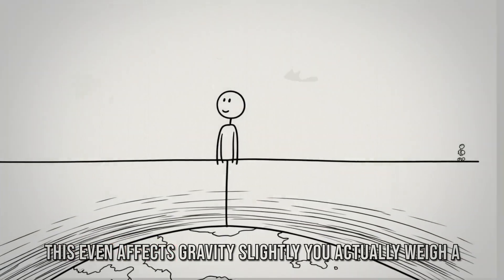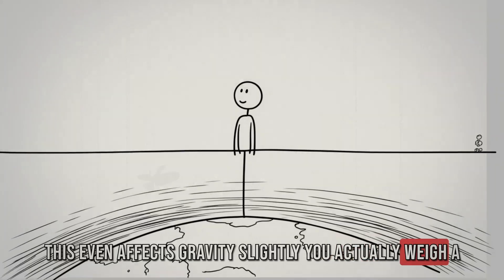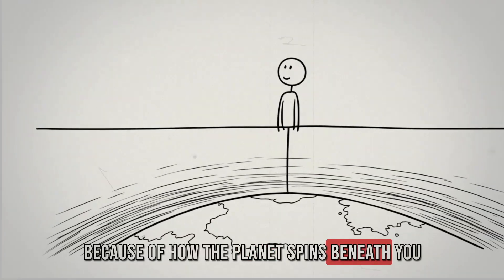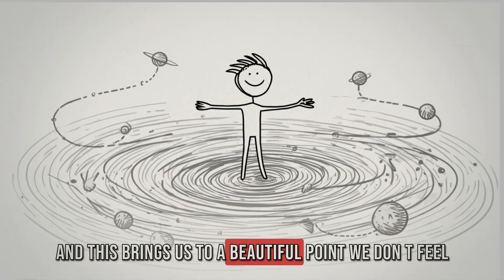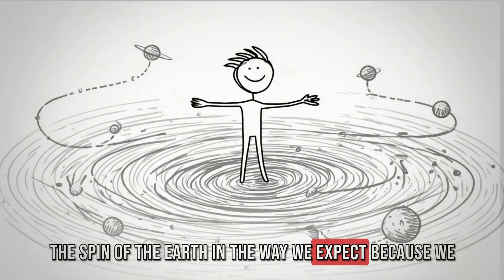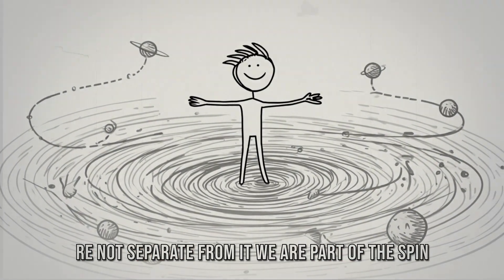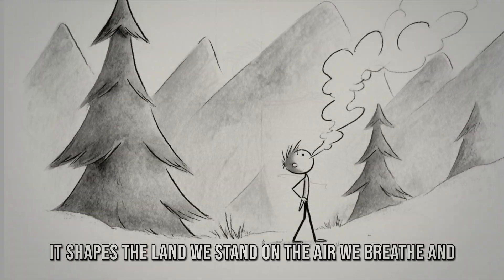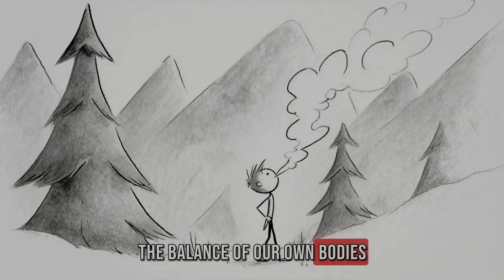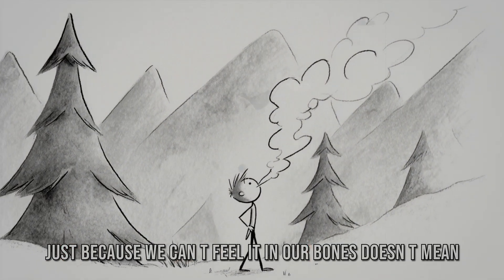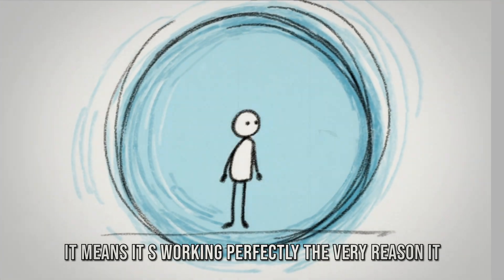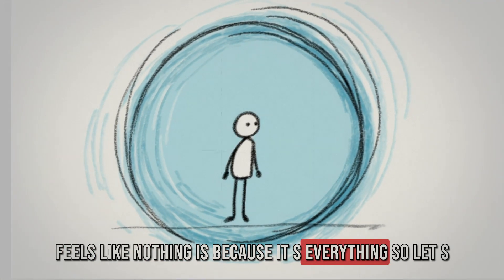This even affects gravity slightly. You actually weigh a tiny bit less at the equator than at the poles, just because of how the planet spins beneath you. And this brings us to a beautiful point. We don't feel the spin of the Earth in the way we expect because we're not separate from it. We are part of the spin. It shapes the land we stand on, the air we breathe, and the balance of our own bodies. Just because we can't feel it in our bones doesn't mean it's not there. It means it's working perfectly. The very reason it feels like nothing is because it's everything.